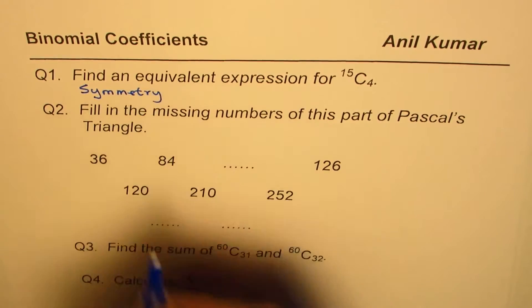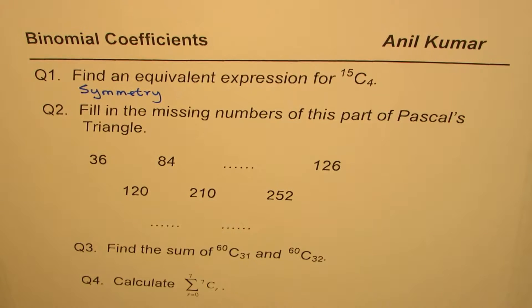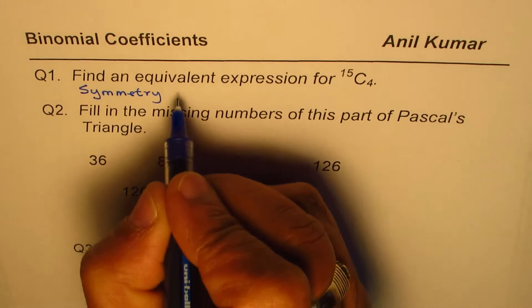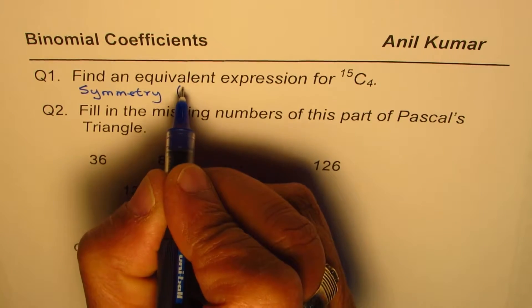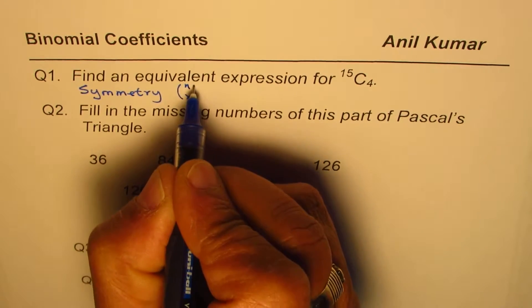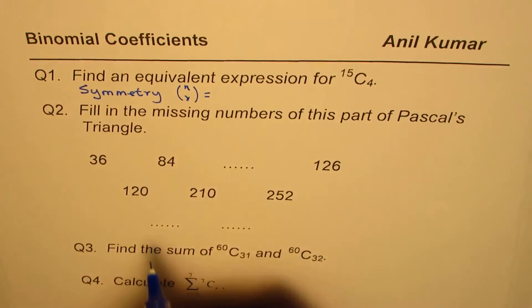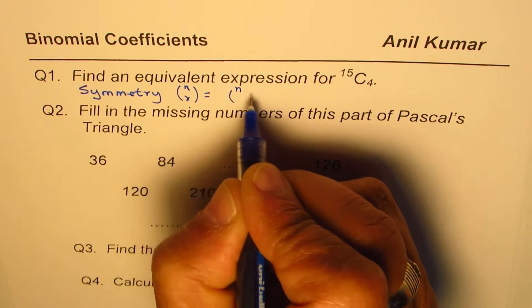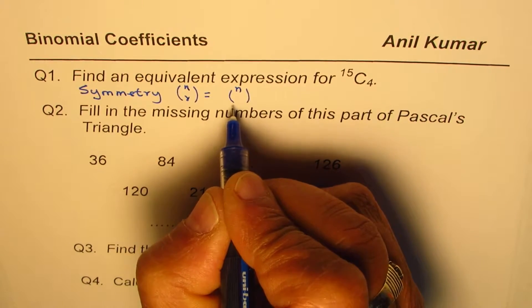And what we learn is that in any row of Pascal's triangle, entries equidistant from each end are equal. So what we learn is, we'll write in a different way: nCr is equal to nC(n minus r).